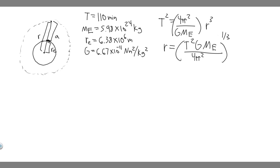When we plug this in, we need to make sure the period is in seconds, so you have to convert. Basically just do 110 minutes times 60 seconds per minute. When you do that, 110 times 60 gives you 6,600 seconds. So now we can plug it in because it's in the correct units.